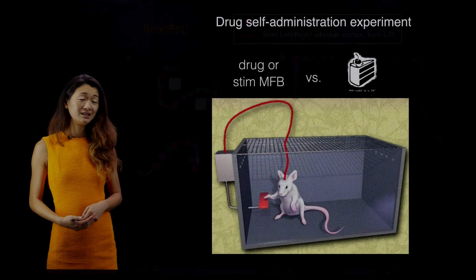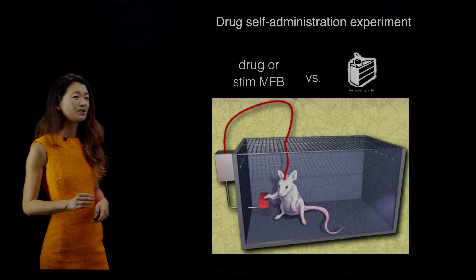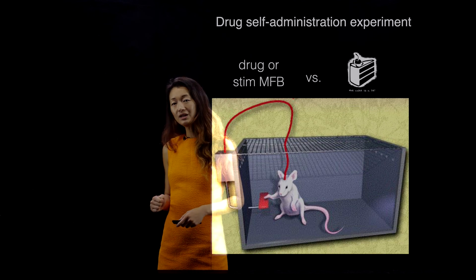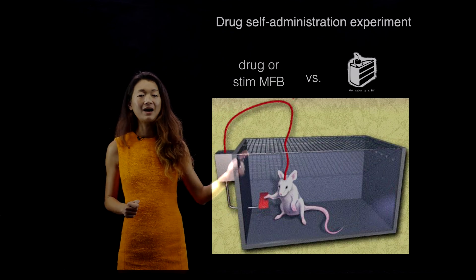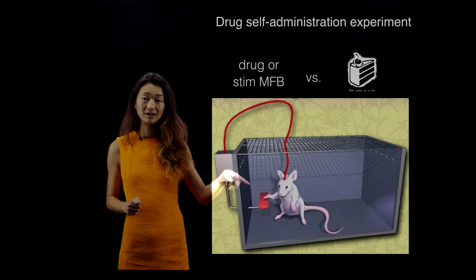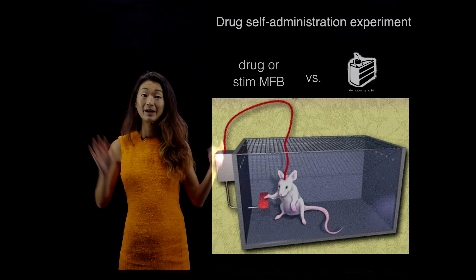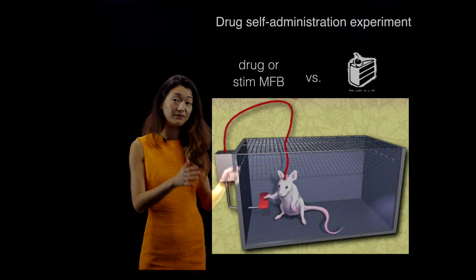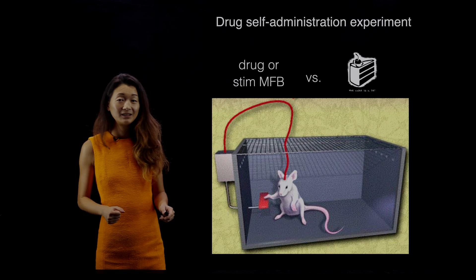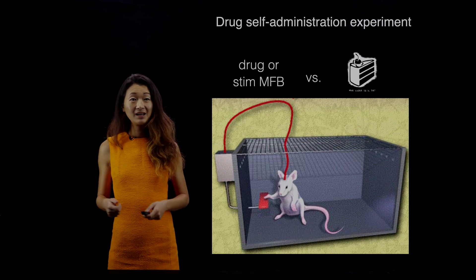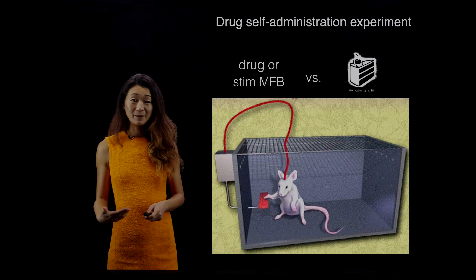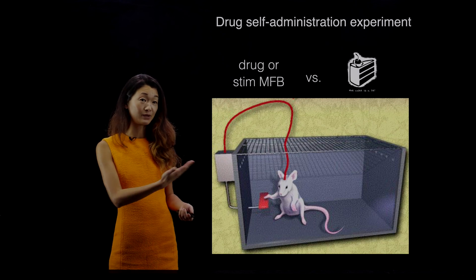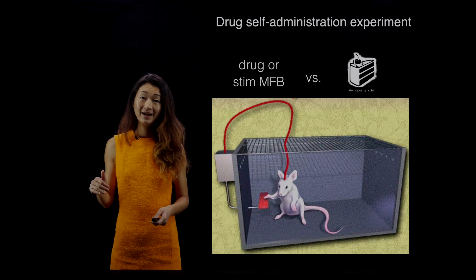That's cool, but it's actually a little distressing as well. In drug self-administration experiments done with rats, the rat is given the option of either food or direct stimulation to its medial forebrain bundle. It can either eat food or get a stimulation directly in its medial forebrain bundle — basically, real cake versus not real cake. Distressingly, in the majority of experiments, because the stimulation of the medial forebrain bundle is so pleasurable, the rat would keep pressing that button and starve to death.